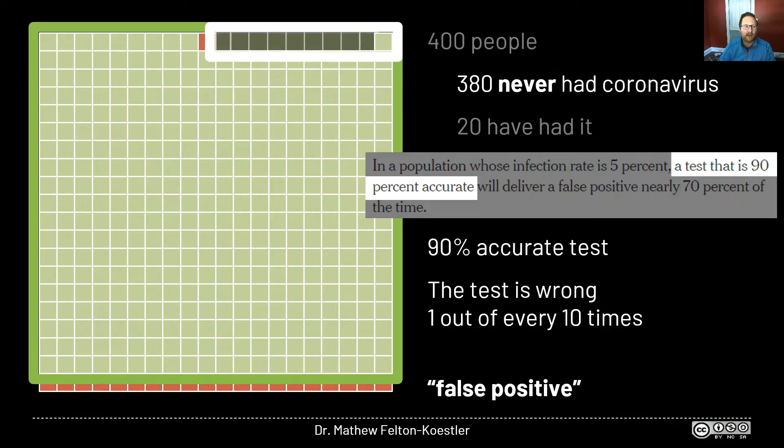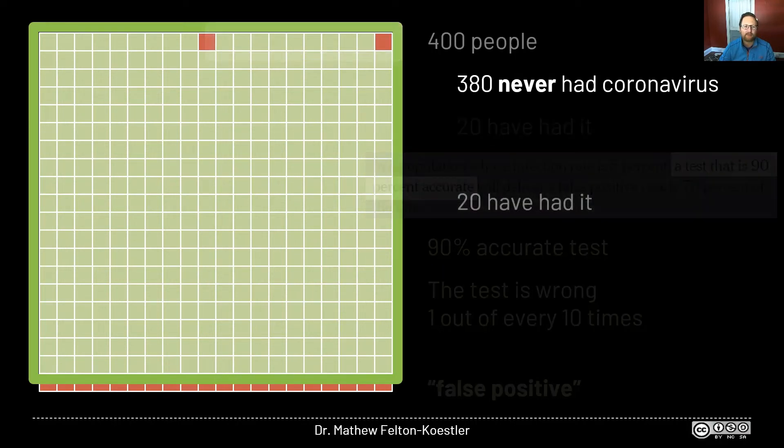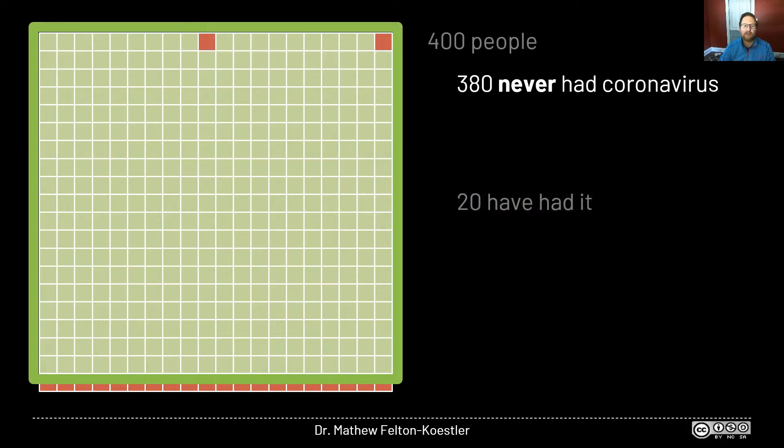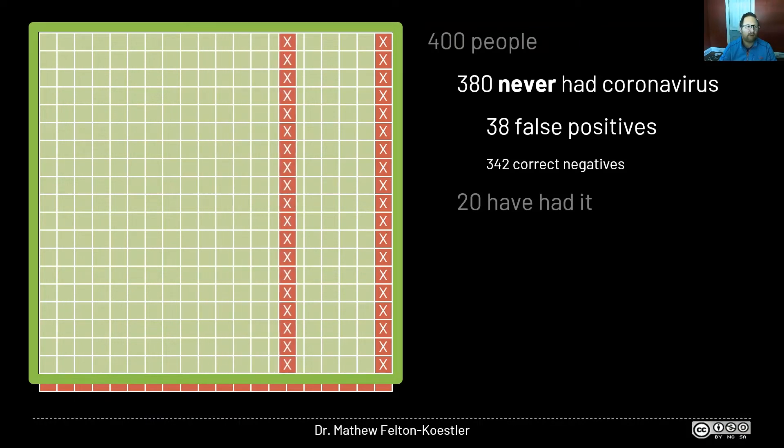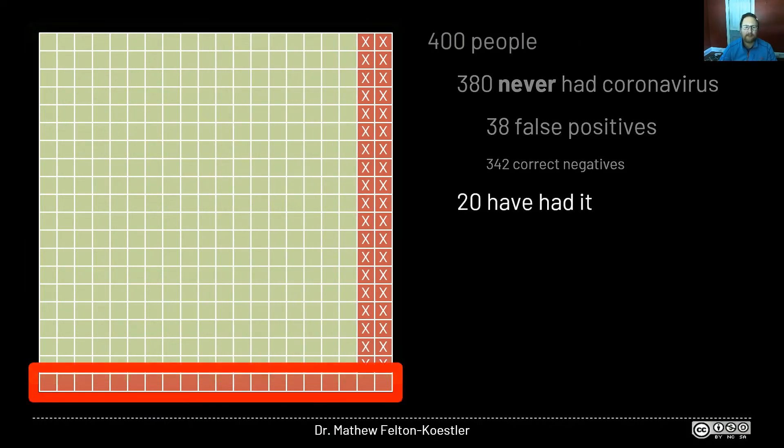So if we look at the next group of 10 people, the same thing is going to happen. Nine of them will be correctly identified as having never had the virus, but one of them is going to be a false positive. If we continue testing this whole group, we're going to end up with all these false positives. One out of every 10 people. In total, we end up with 38 false positives and 342 correct or true negatives. And we're going to focus on the positives today, and it'll become more clear as we go why we're going to do that. I'm going to put X's in all these boxes to show that they're false positives. The test thinks these people had the coronavirus, but in reality, they've never had it. And to keep things organized, I'm going to move these people over to the right just so they're all together.